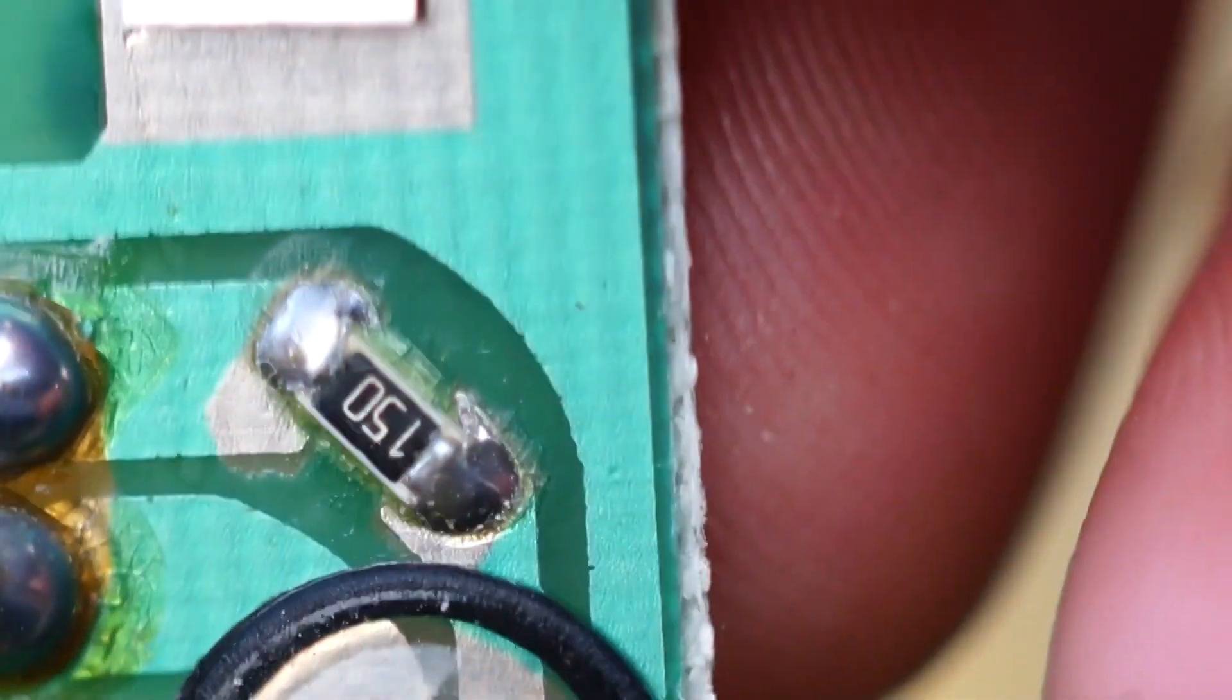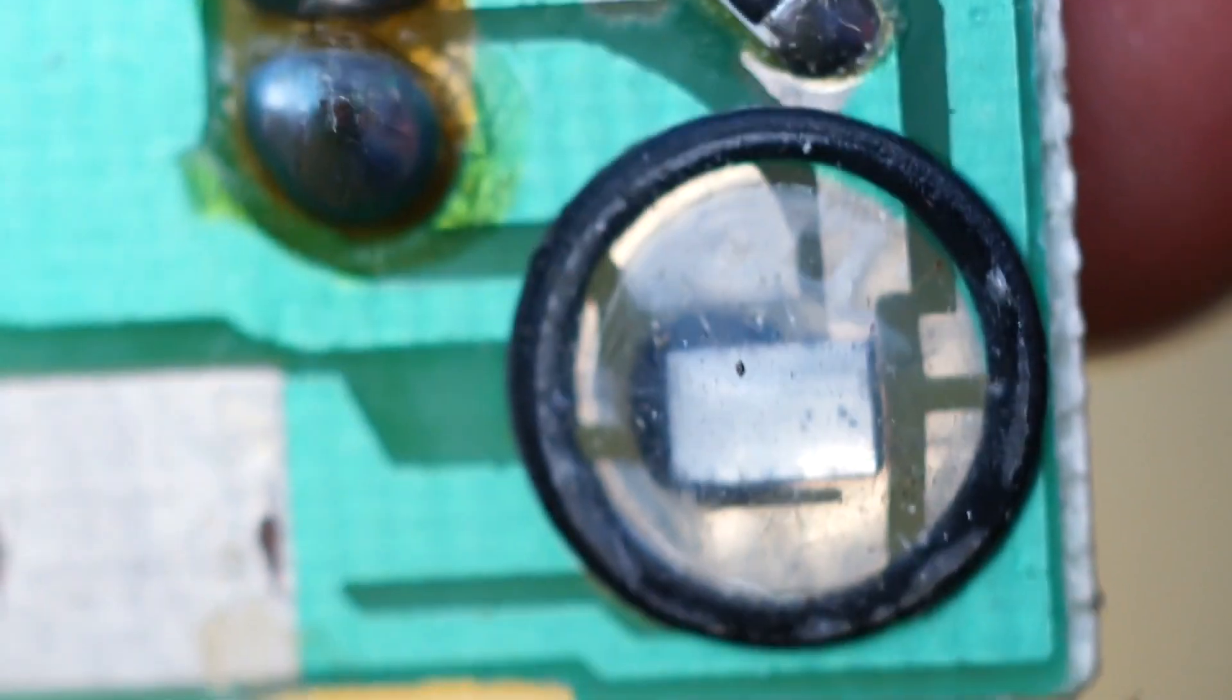So as you can see the battery contacts go straight into the chip, which then proceeds to have a 150 ohm resistor on there on the LED, which goes straight into the little IC. Which you can just about make out some of the details on the die itself.